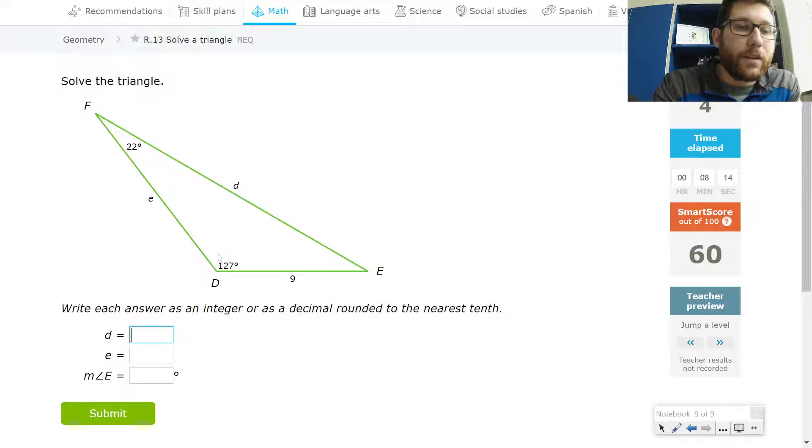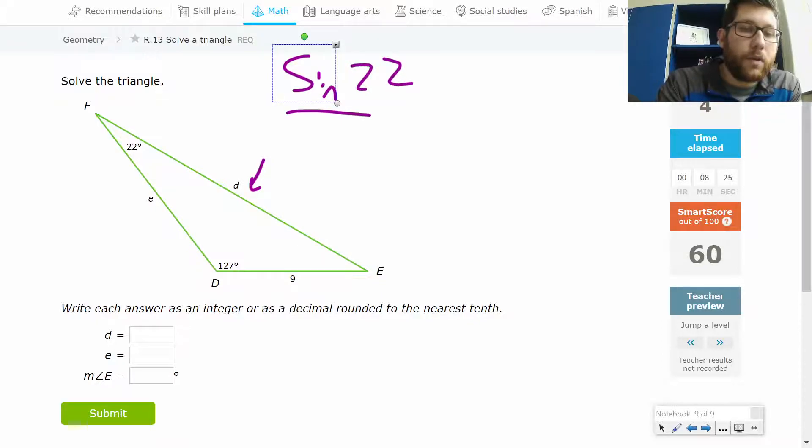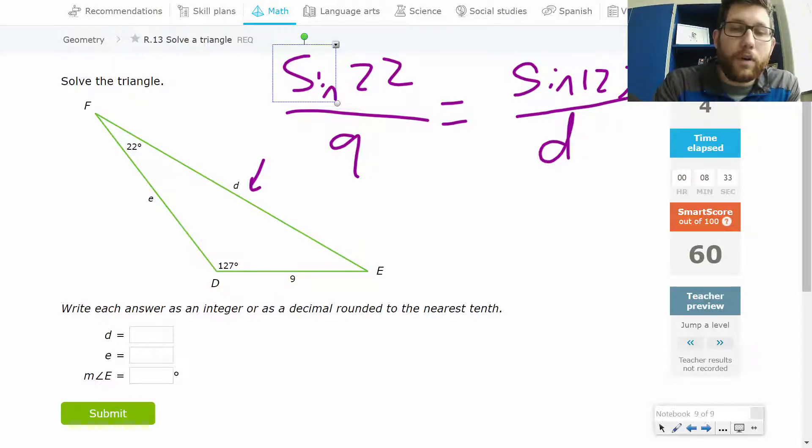So let's just go ahead and set this up. We'll set up a couple of these. So the first thing I would probably do is I'd probably solve for this value right here for letter D. So let's set this thing up. So sine 22 all over 9 is equal to sine 127 all over our variable D.